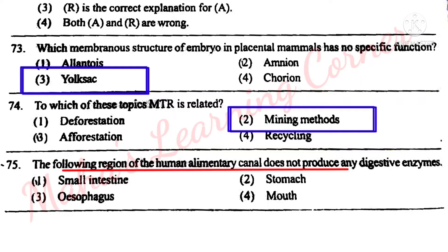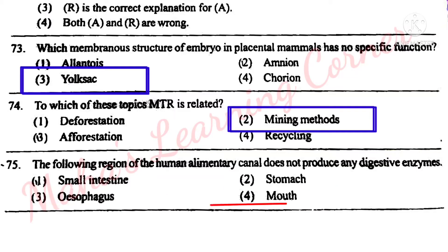The following region of the human alimentary canal does not produce any digestive enzymes. Options: Small intestine, Stomach, Esophagus, Mouth. Correct answer: Option 3 – Esophagus. The small intestine, stomach, and mouth all release digestive juices, but the esophagus does not. So option 3 is the correct answer.